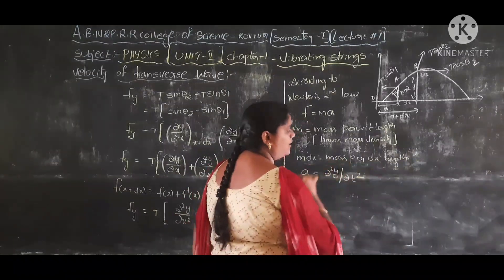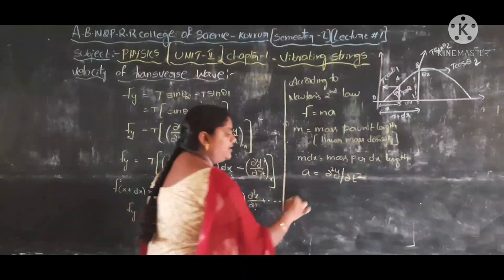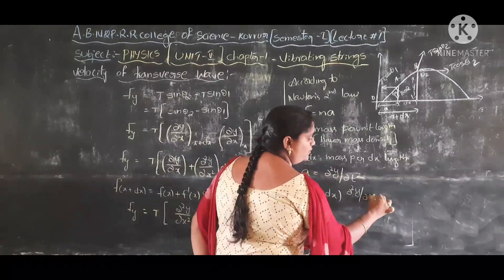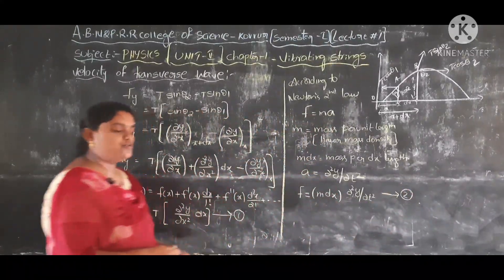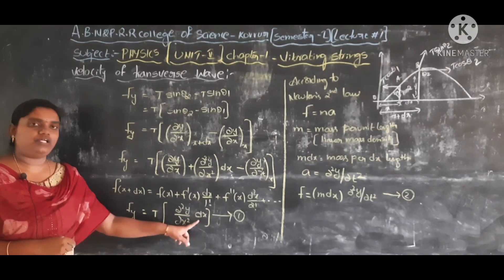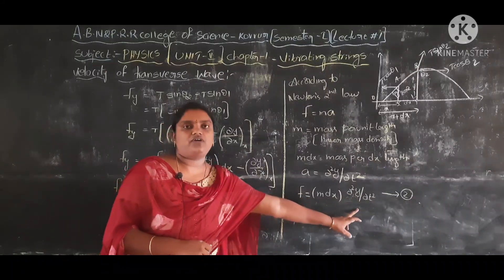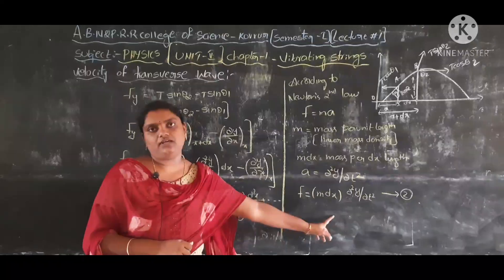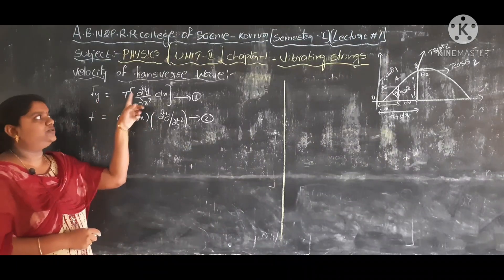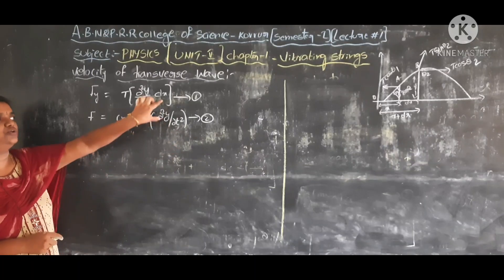The acceleration in the vertical direction is ∂²y/∂t², the rate of change of velocity. So by Newton's second law: F = m·dx·(∂²y/∂t²). This is equation number 2. We now have the force from equation 1: Fy = T·(∂²y/∂x²)·dx, and from equation 2: F = m·dx·(∂²y/∂t²). Setting them equal, we solve.